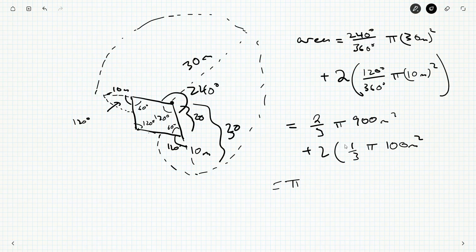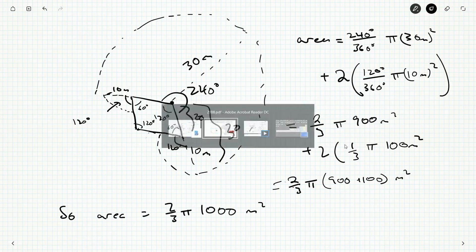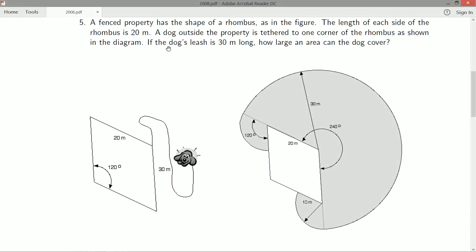So we get 2/3 π times 900 meters squared plus 2 times 1/3 π times 100 meters squared. So we can pull out the π and the 100. Now I'll just pull out the 2/3, so we'll do 2/3 π and then 900 plus 100 meters squared. So the area is 2/3 π times 1000 meters squared, or 2000/3 π. There's lots of ways you can write it and express it, equally valid.